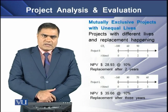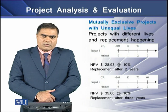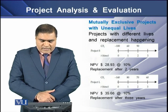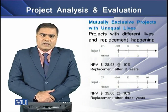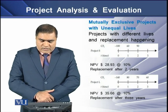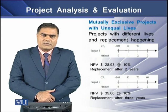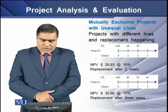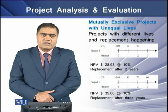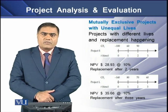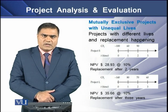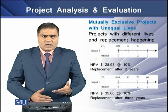Let's discuss an example of mutually exclusive projects that have unequal lives. We have two projects: Project S and Project L. Project S has a life of two years, and after two years there is a replacement. Project L has a life of three years, and after three years there is a project replacement. The NPV of Project S is $28.93 and Project L has an NPV of $35.66. Both projects have a required rate of return of 10%, used as the discount factor.